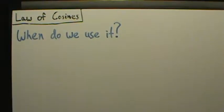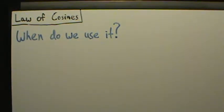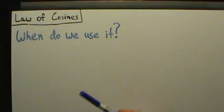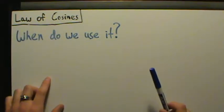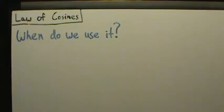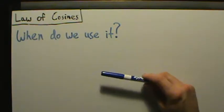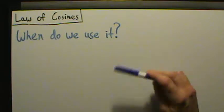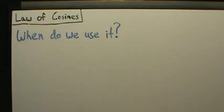In this video we're going to talk about when we use the law of cosines and then we'll see an example of using it. In the previous video we explained the formulas and where they come from, and now we're going to briefly explain when we use the law of cosines. We use this when we want to solve triangles — if you're given some information about some of the sides and some of the angles of a triangle, and you want to find the missing sides and the missing angles, you can use the law of cosines.